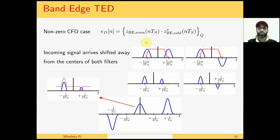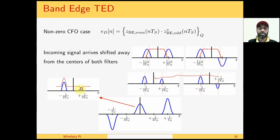For the non-zero CFO case, the input signal arrives slightly toward the left (for negative CFO), so we have a larger output from the lower band-edge filter and a smaller output from the upper band-edge filter. When convolution in frequency domain occurs, we get two similar impulses at the symbol rate. As the spectrum rolls over another, when it reaches right at the middle we capture this moment and see that the output is the area under the product curve minus the area under the other — the energy difference between the two outputs — which is an indicator of CFO.